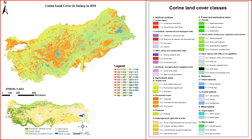Land use in Turkey is diverse and reflects the country's varied geography, economic activities, and cultural heritage. The different regions of Turkey have distinct patterns of land use, encompassing urban areas, agricultural lands, forests, and natural reserves. Here are some key aspects of land use in Turkey.